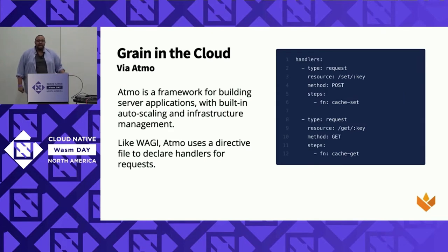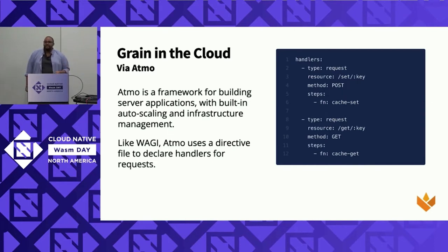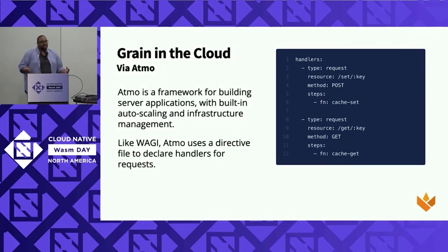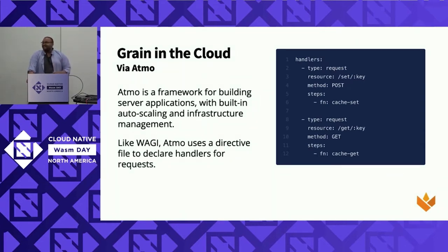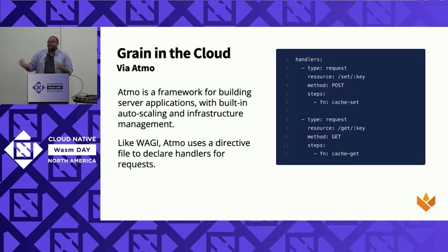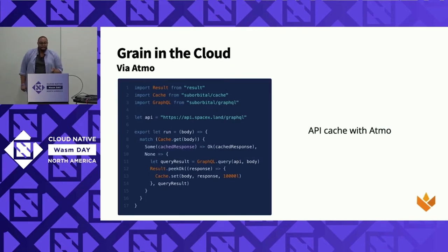I want to talk a little bit about Atmo. You heard a talk from Connor earlier. In my day job, I work at Suborbital — an awesome company. We have this project called Atmo. It's similar to WAGI in terms of handling requests, but it's a tad bit more involved and gives you a lot more features. It makes things a lot easier for you to do things like HTTP requests. It's also got built-in support for auto-scaling and infrastructure management. We've got this directive here — this is a simple example of a cache set or cache get function, and this is where a language like Grain starts to shine.